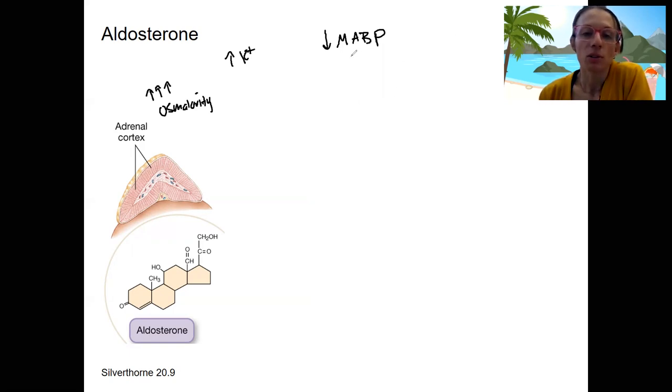So this is going to result in, ultimately... Two of these are going to stimulate aldosterone secretion. Osmolarity is going to decrease aldosterone secretion from the kidneys. That makes sense because we don't want to keep more sodium.